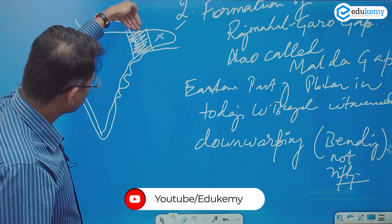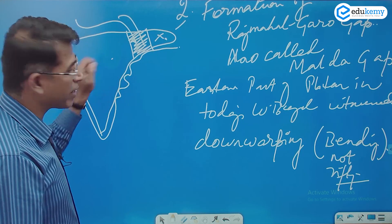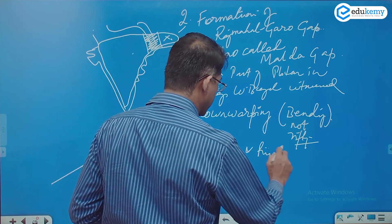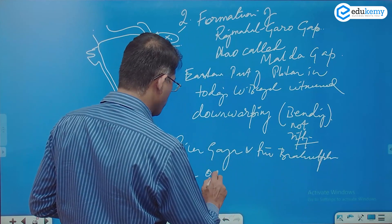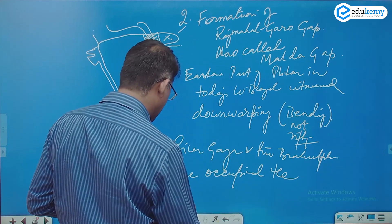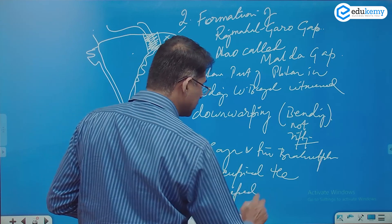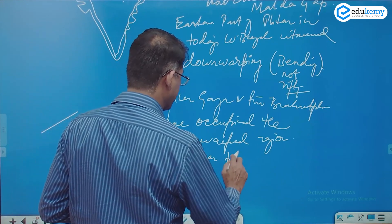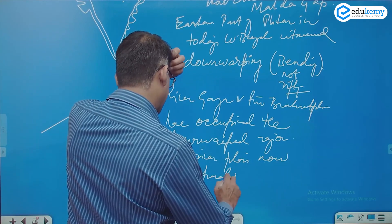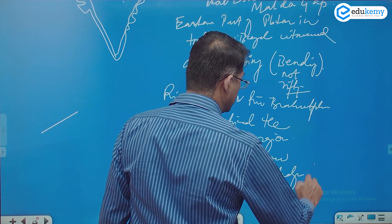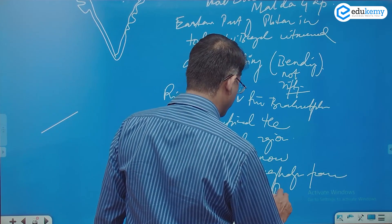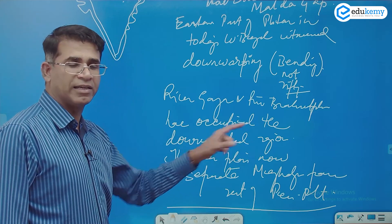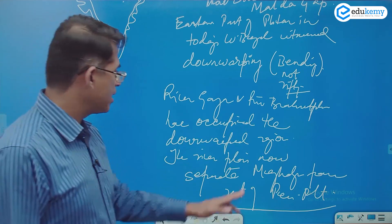The river Ganga and river Brahmaputra have occupied the down warped region. The river deposits formed river plains, which now separate Meghalaya from the rest of the peninsular plateau.